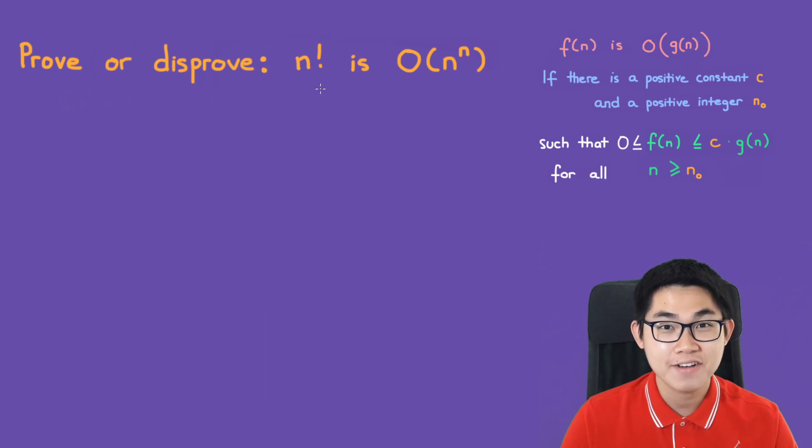Prove or disprove: n factorial is O of n to the power of n.